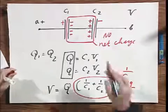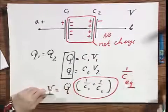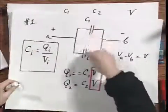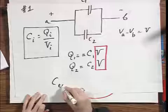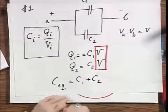And this is often called one over C equivalent. The C equivalent is, so to speak, replacing these two. If you had a parallel set of capacitors, then that C equivalent would become C1 plus C2. And I'm sure you will have no problems proving that.